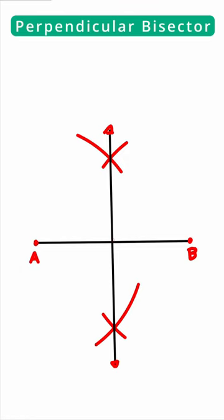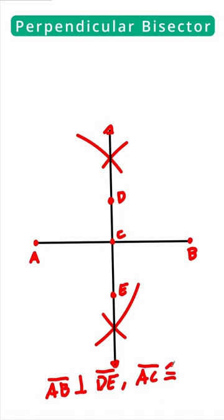If this is our perpendicular bisector, let's call this C, this D, and this E. Then we can say the following: AB is perpendicular to DE, and also AC is congruent to CB.